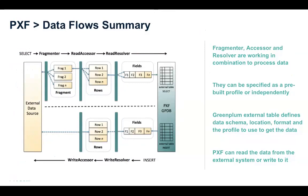To summarize how all pieces fit together: the Fragmenter, Accessor, and Resolver work together to process data from an external system — loading it, breaking it into fragments, then into rows, then into values, and finally sending it to the protocol handler in Greenplum to convert into tuples. The Greenplum external table defines the schema, location, format, and profile to use. For the write flow, data can be exported from Greenplum into an external data source. In the write case, there is no fragmenter because the data is already pre-fragmented and distributed on the Greenplum side — every segment sends its subset of data through PXF to be written to the external system.